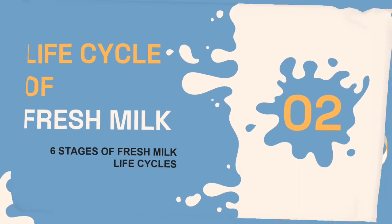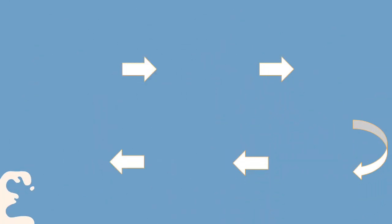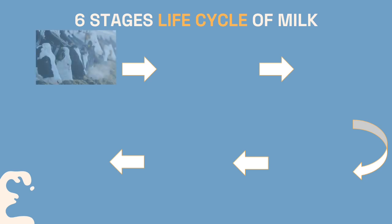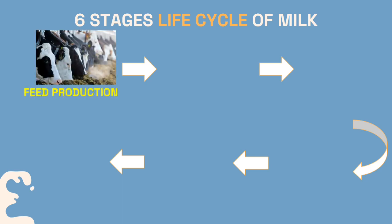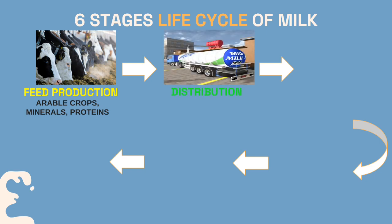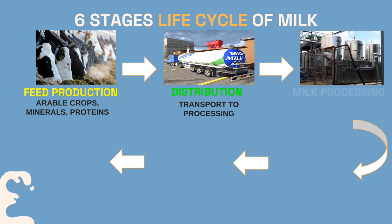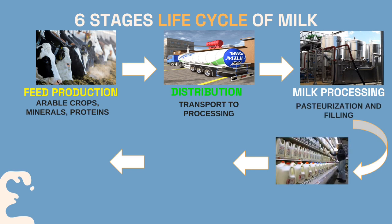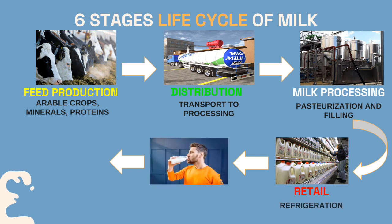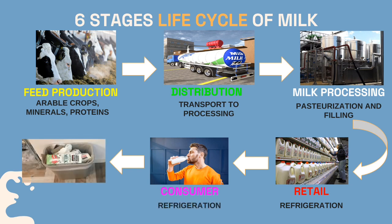We are going to see the six stages of the fresh milk life cycle. The first stage is feed production, where the cattle are fed with arable crops, minerals, and proteins. The second stage is distribution, where cow milk is transported to a processing facility. The third stage is milk processing, where the fresh milk goes through pasteurization and filling. The next stage is retail, where processed fresh milk is refrigerated in the store. The consumer stage is where customers bring the milk home and refrigerate it. The final stage is end of life, where disposal of the packaging takes place.